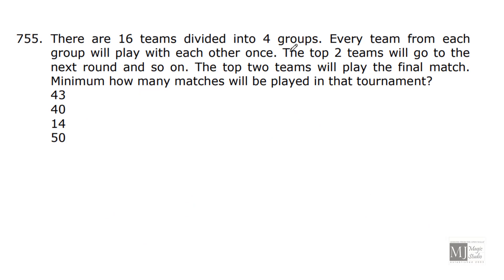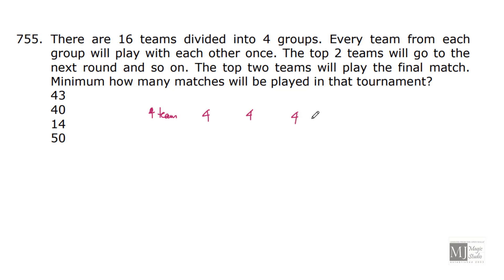There are 16 teams divided into 4 groups. So, each group must have 4 teams. Every team from each group will play with each other once. The top 2 teams will go to the next round and so on. The top 2 teams will play the final match. Minimum how many matches will be played in that tournament? Let's see how many matches are there in the first round. In first round, these 4 teams will be playing with each other. So, number of matches will be 4C2. 4C2 is 6. So, 6 for each group. In first round, we will have 24 matches.